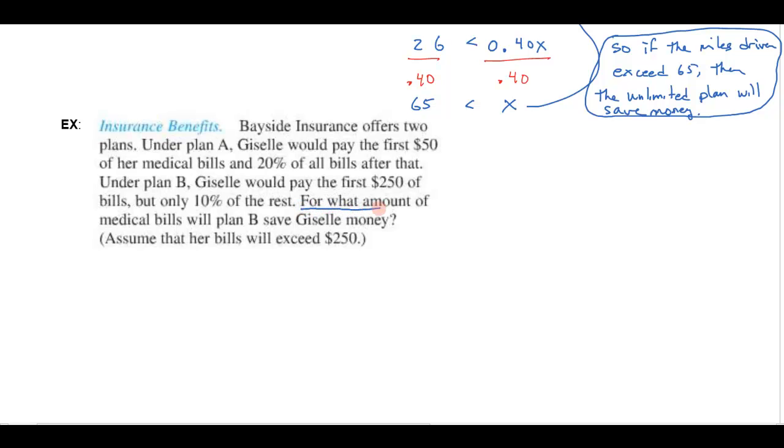Let's read very carefully. Notice that what we're looking for, that's variable in this, is the amount of medical bills for which plan B will save Giselle money. So let's start off and let's let X equal the amount of Giselle's medical bills. And then we have two plans. We have plan A that's going to cost so much and we have plan B. Plan A says that she's going to have to pay $50.